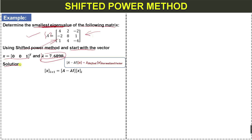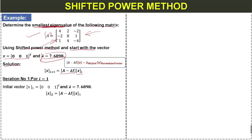We have the iterative equation: x(i+1) = (A - lambda_i) * x(i). For iteration 1 (i=1), we use the initial vector and the lambda value equal to 7.6898. We substitute these values into the equation.